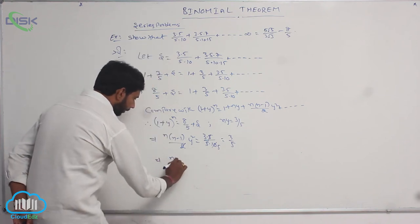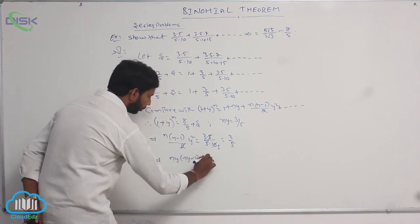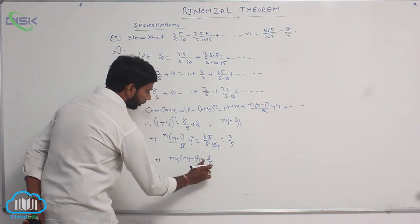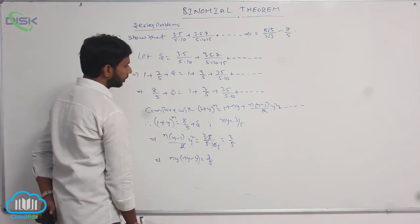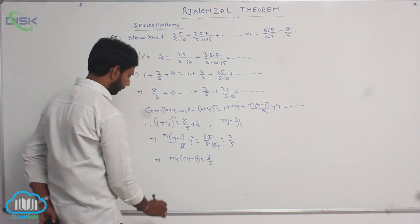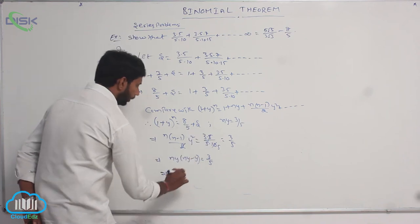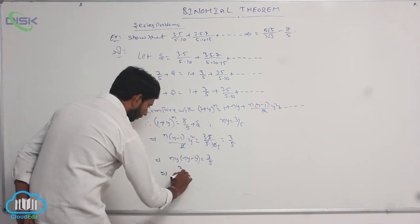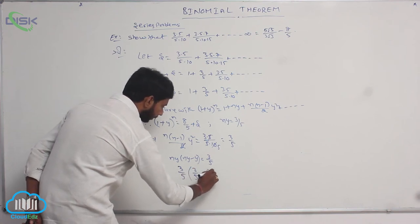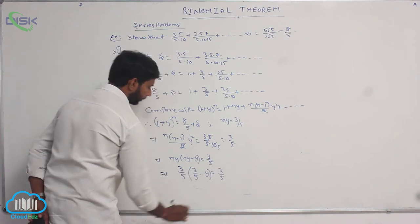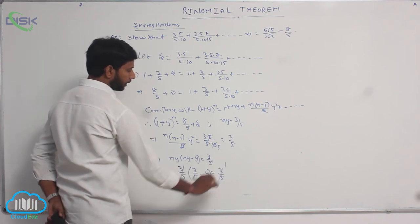The second term can be written as ny · (ny - y) = 3/5. Substituting the value of ny: since ny = 3/5, we get (3/5)(3/5 - y) = 3/5. Here 3/5 can be cancelled.